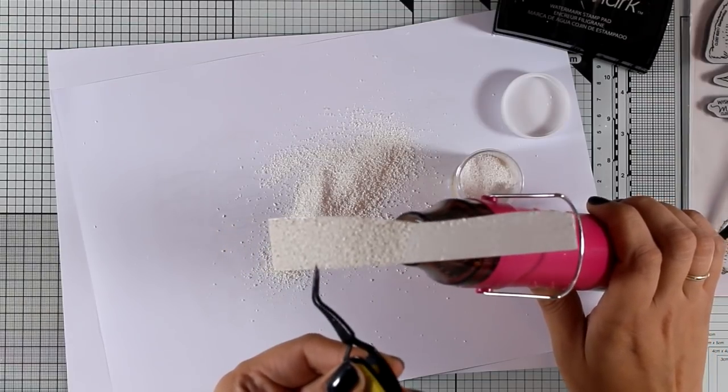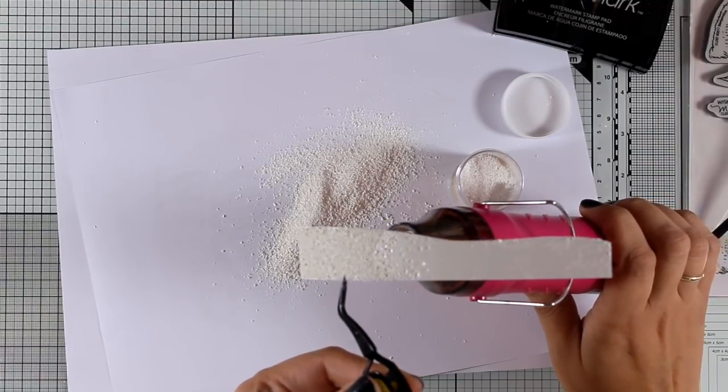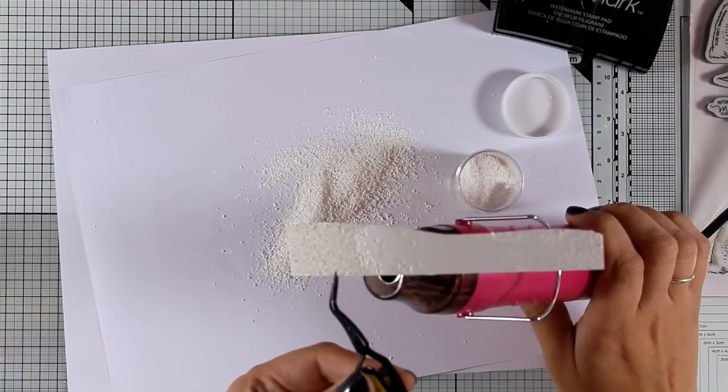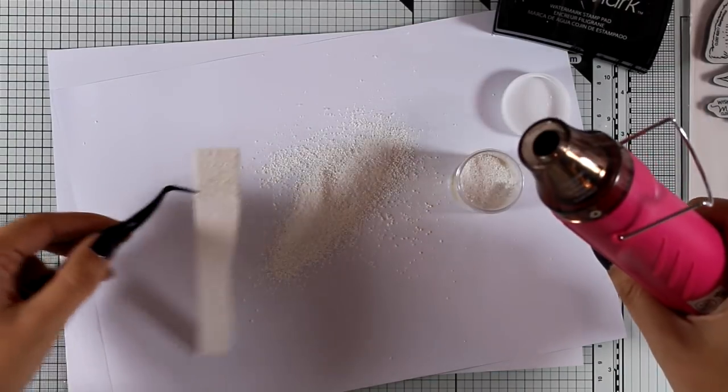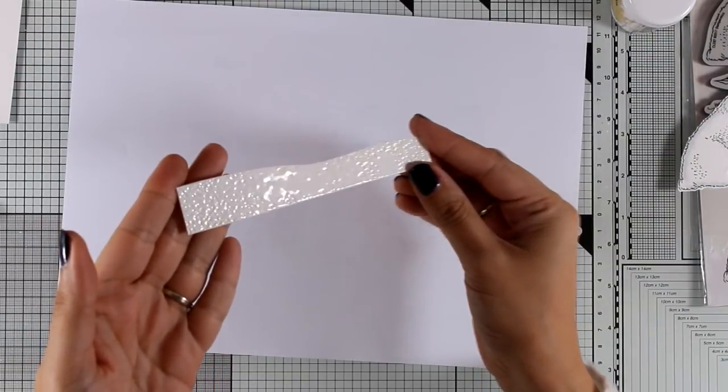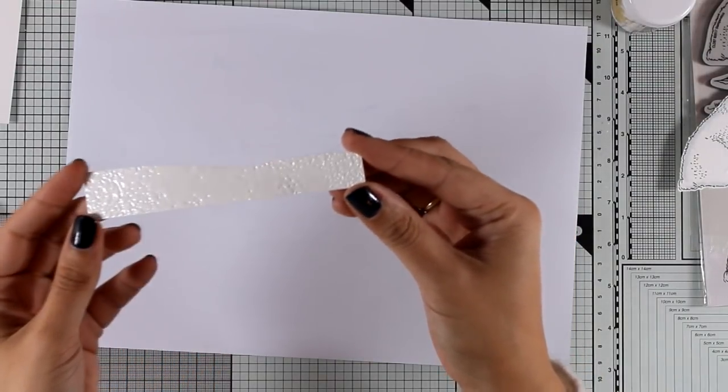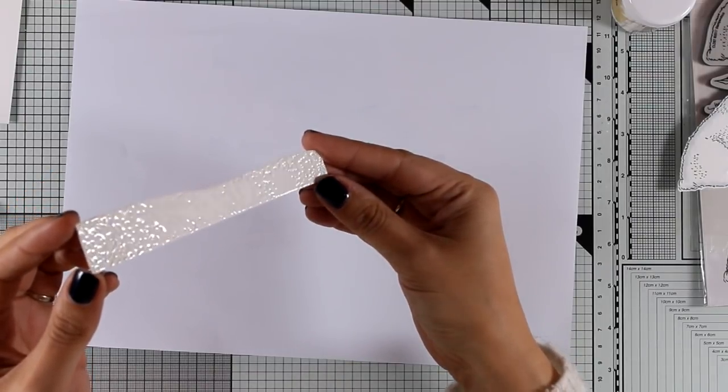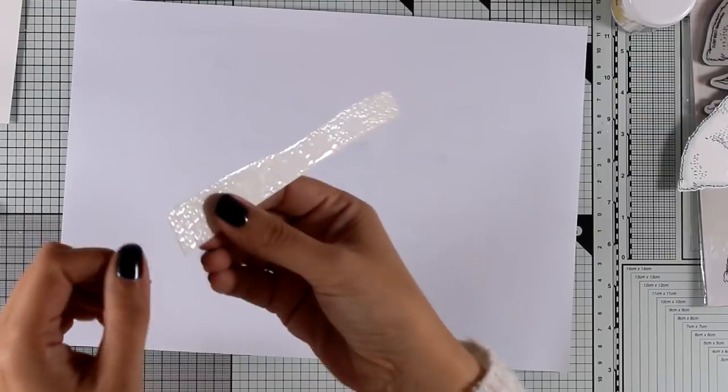Depending on how much heat you apply, you can get a very smooth finish or a very textured one. The more heat, the more melted and smooth it will look. I didn't want it too smooth as I want the shine and texture on my snowbank. This is how mine looks and I just love it.